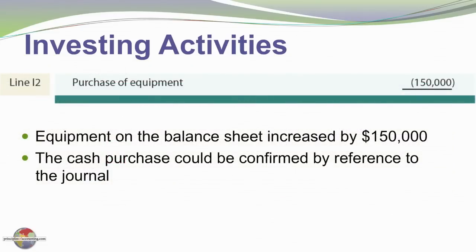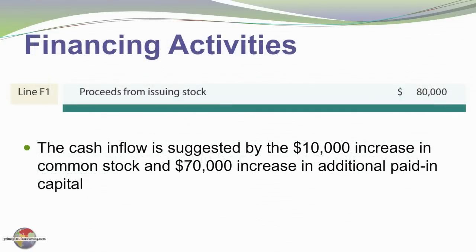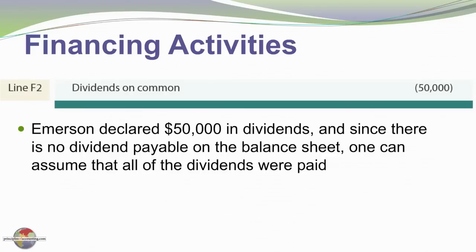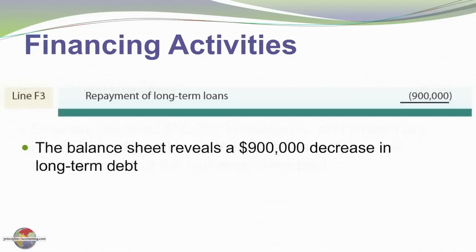Purchase of equipment was $150,000, determined by reference to the balance sheet change in equipment — we assumed cash was used. We issued stock for $80,000, visible on the balance sheet where common stock and additional paid-in capital went up $10,000 and $70,000 respectively. Dividends of $50,000 from the statement of retained earnings are shown as a financing activities cash outflow. Repayment of long-term loans is also in financing activities, as the balance sheet showed a $900,000 decrease in the term loan payable.